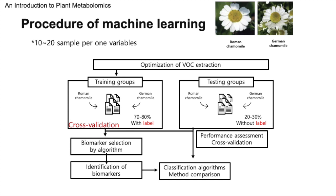We then categorize our data into training and testing groups, with 70–80% for training and the remainder for testing. The training samples are labeled, teaching the model the key differences between the two chamomile types. The testing samples remain unlabeled, poised to challenge the model's predictive prowess later in the process. With our training set, we apply cross-validation techniques. This method is akin to a trial run within our training data, offering us insight into how well our model is learning and, more importantly, its capacity for generalization.